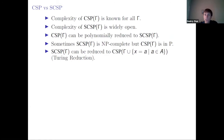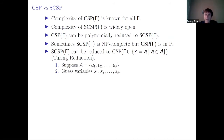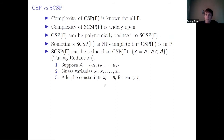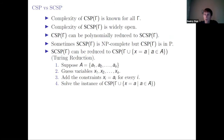Another trivial observation: surjective CSP can be reduced to CSP over gamma with constant relations, and this is a Turing reduction. To find a surjective solution, assume we have S elements in our domain. We need to guess S variables taking all different elements. We add constraints that pin those S variables to each element of the domain, giving an instance of CSP over gamma with constant relations. This is a polynomial reduction since we have polynomially many guesses.